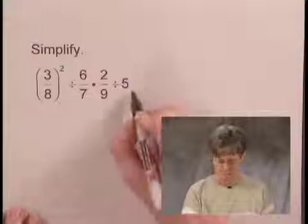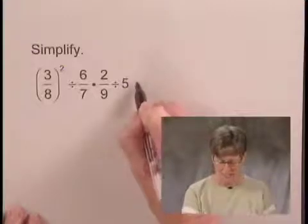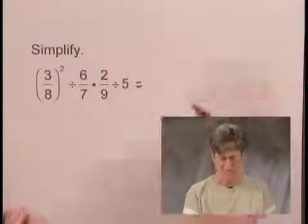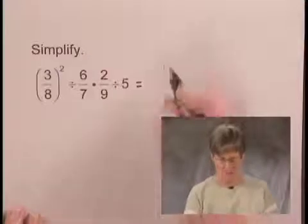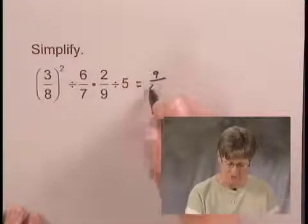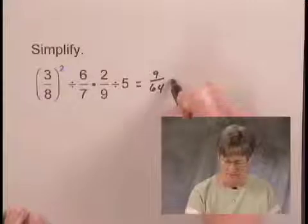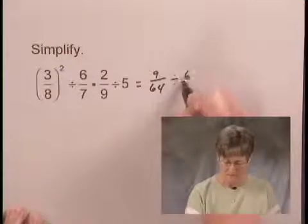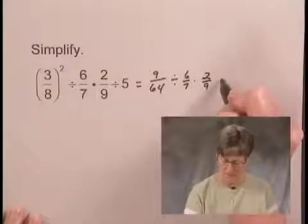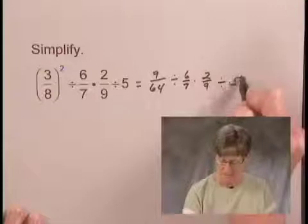So first we'll evaluate 3 eighths squared. That's the same thing as 3 eighths times 3 eighths, so we get 9 sixty-fourths when we evaluate that. And then we divide by 6 sevenths, multiply by 2 ninths, and divide by 5.